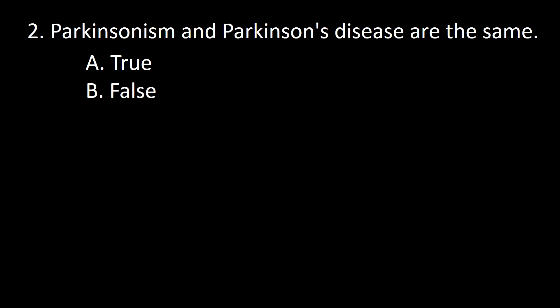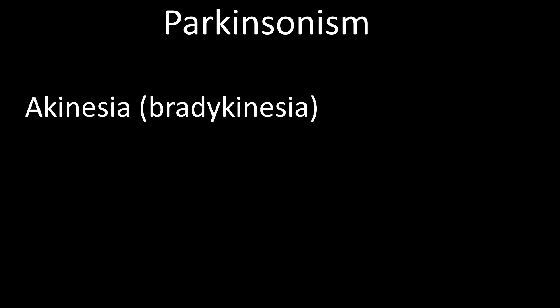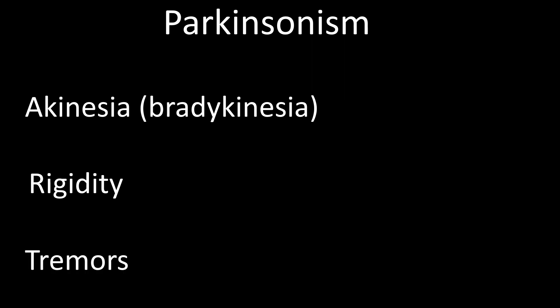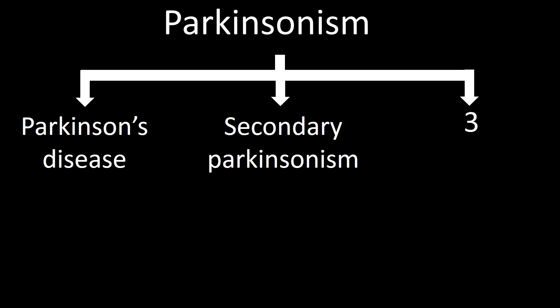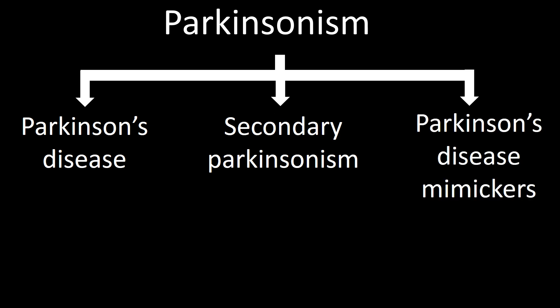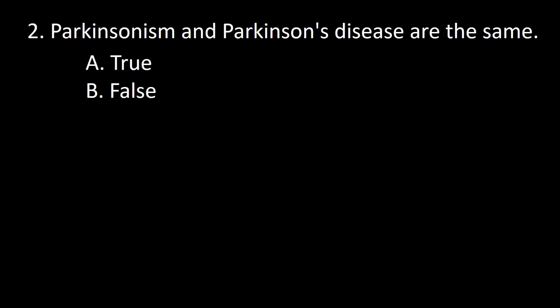Next question: Parkinsonism and Parkinson's disease are the same — A, true; B, false. Parkinsonism usually refers to a combination of akinesia or bradykinesia, rigidity, and tremor. In the presence of such findings, we must consider three types of conditions: Parkinson's disease, secondary Parkinsonism, and Parkinson's disease mimickers, because they have different treatments. So the answer is false.